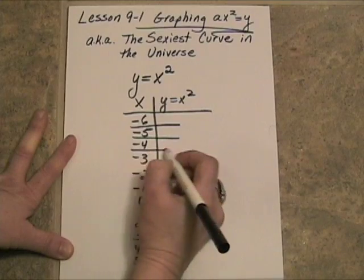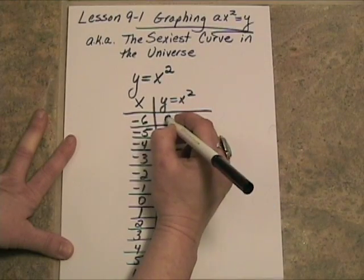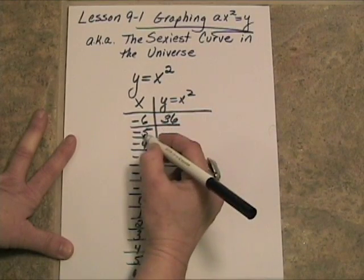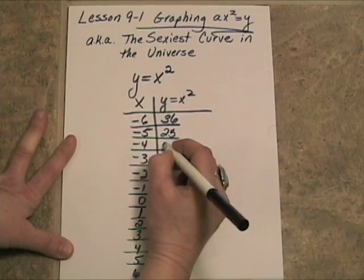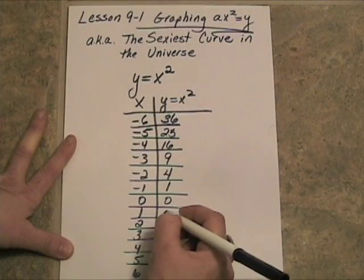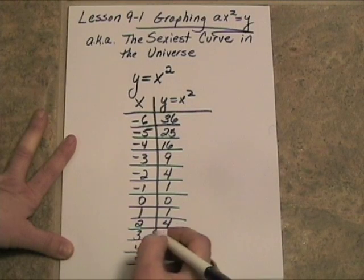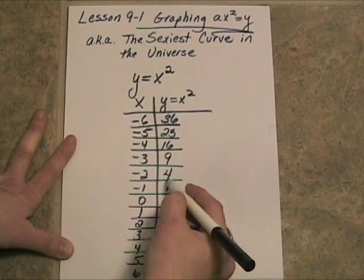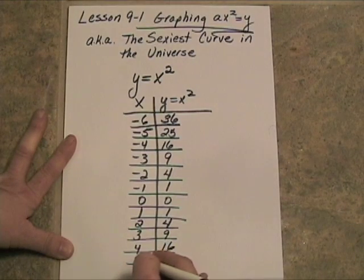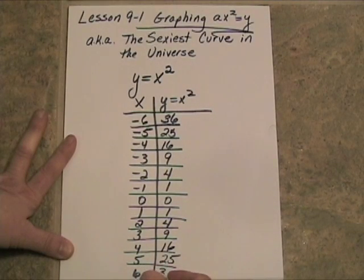When we square negative 6, we will get positive 36. When we square negative 5, we will get positive 25. Squaring negative 4, we get 16. Squaring negative 3, we get 9. Squaring negative 2, we get 4. Squaring negative 1, we get 1. Zero squared is 0. Positive 1 squared, we get 1. Squaring positive 2, we get 4. Squaring positive 3, we get 9. Oh wow, look, something's happening here. The values are repeating themselves. Squaring positive 5, we also get 25, and squaring positive 6, we get 36.